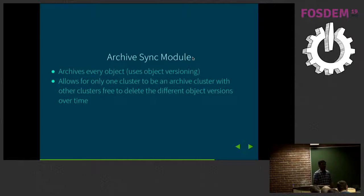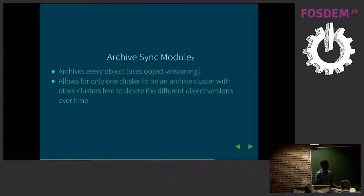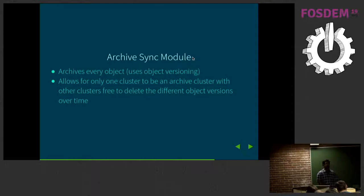The archive sync module is a new feature in Nautilus. RGW already supports object versioning from S3, where every write creates a new version rather than deleting the object, so you can roll back between versions. The archive sync module lets you, for example, do away with versioning at local sites and have one dedicated archive site that retains every version — there is no delete in the archive site. So you can avoid versioning at the local cluster and just do versioning at a remote archive cluster.